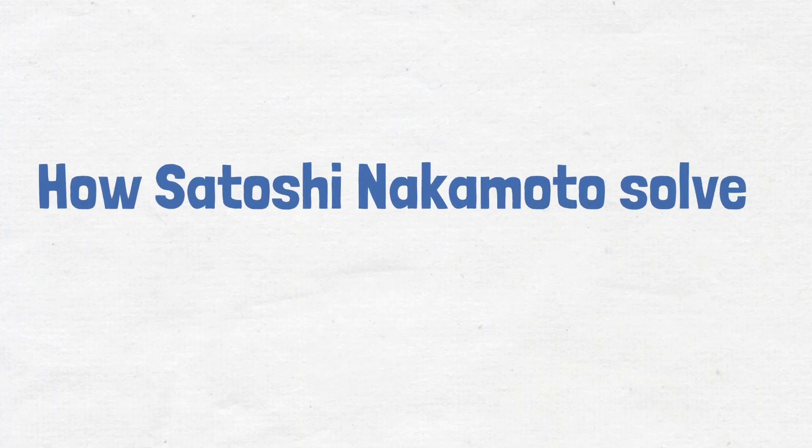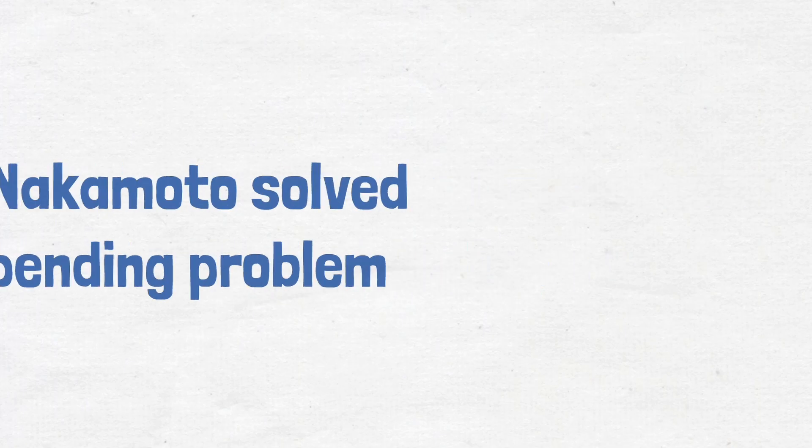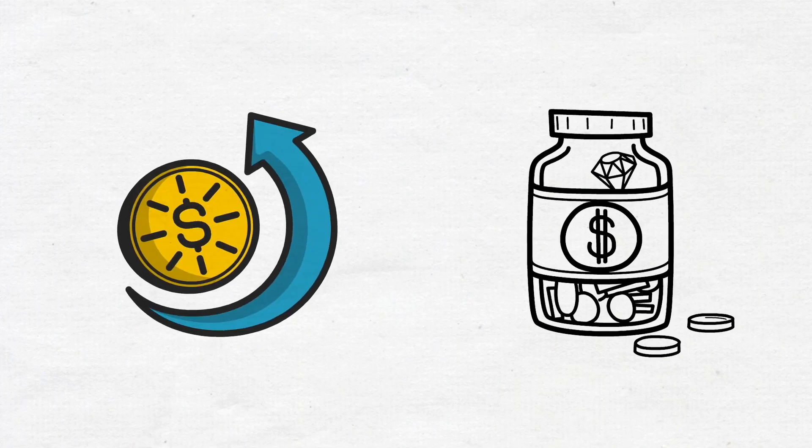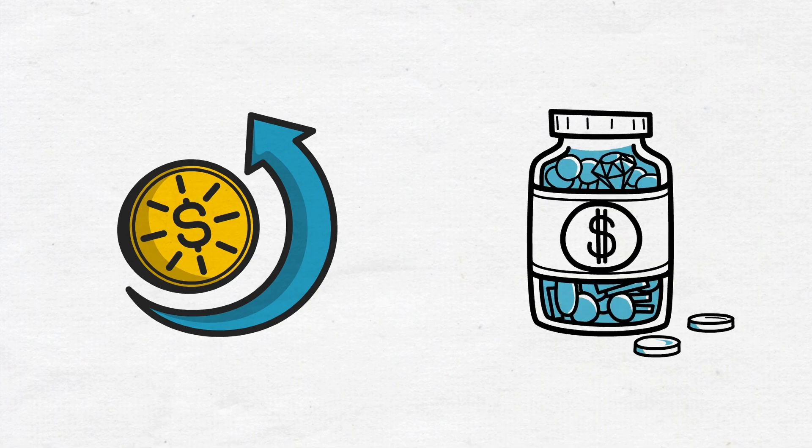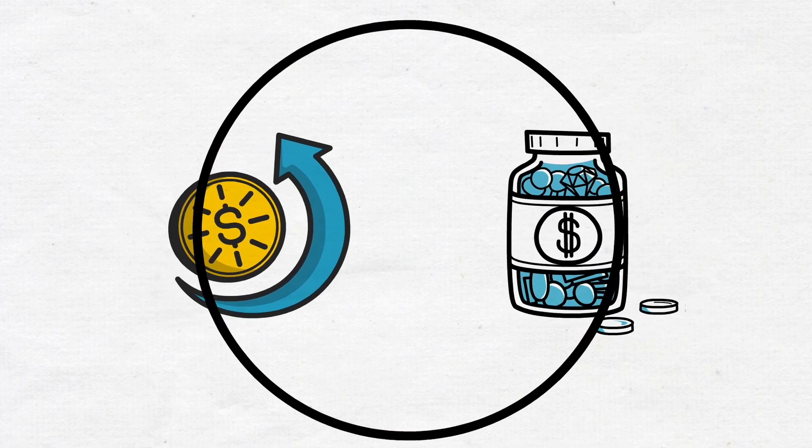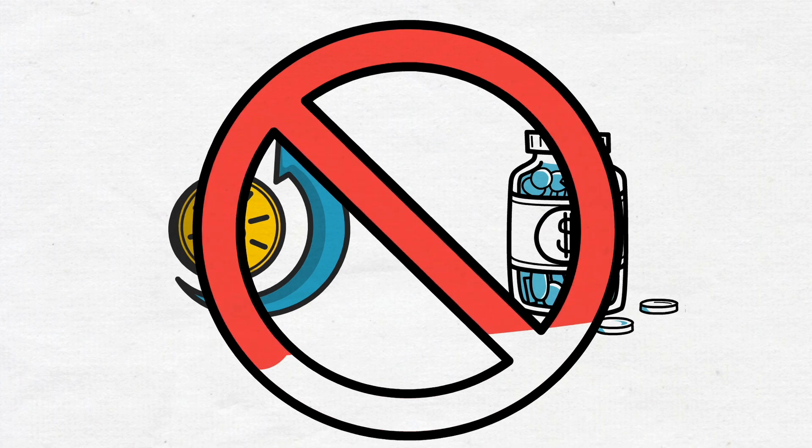How Satoshi Nakamoto Solved the Double Spending Problem. The belief that an endless number of a given digital currency can be generated, or that a person may spend the same coin again and again undermining the currency, are both incorrect.